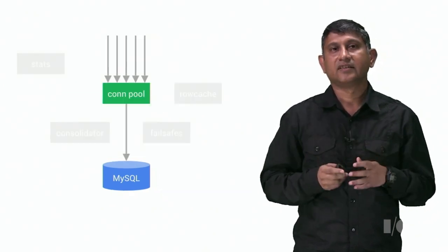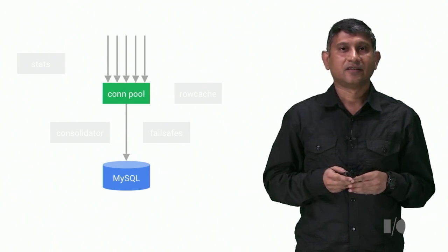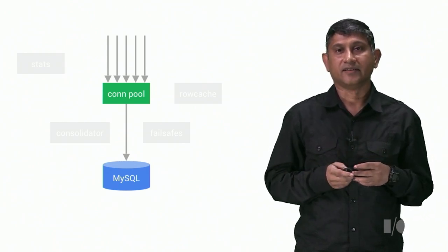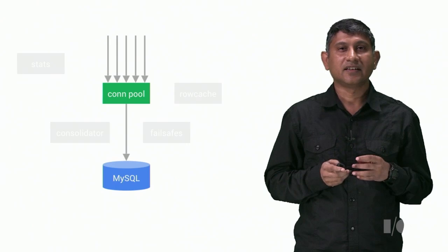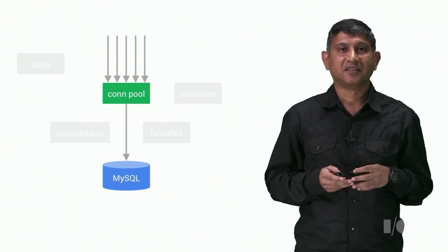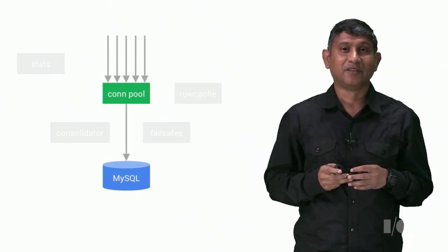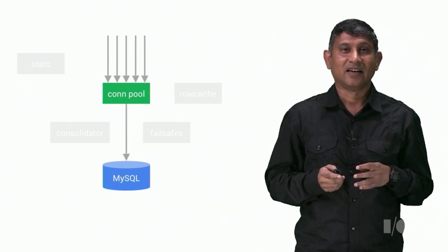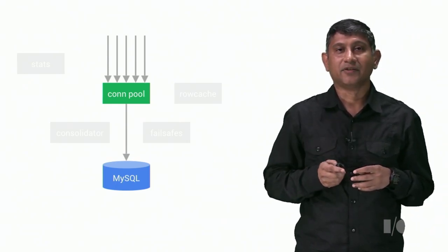So what does this proxy called VTTablet do that is so awesome? So the first thing it does is connection pooling. The cost of a MySQL connection is around 2 megabytes. And imagine how much this will be with tens of thousands of connections. And if your app becomes popular, this is the kind of demand you will see.